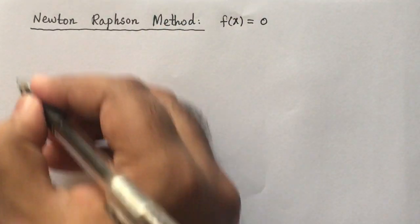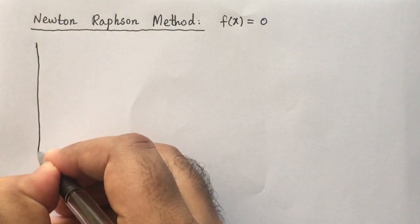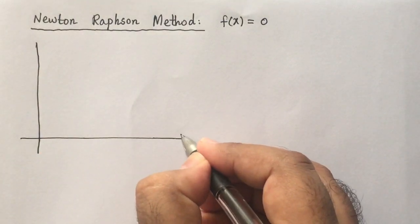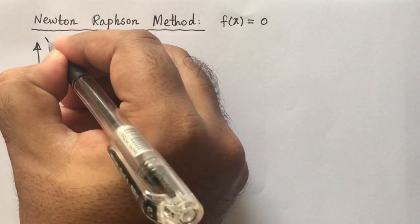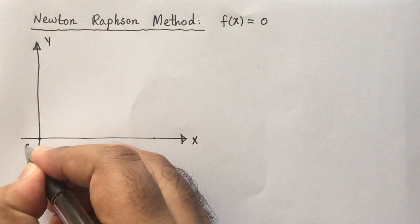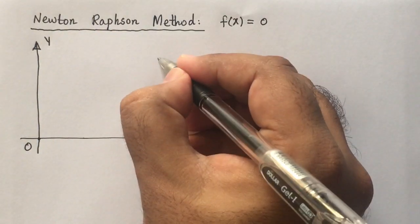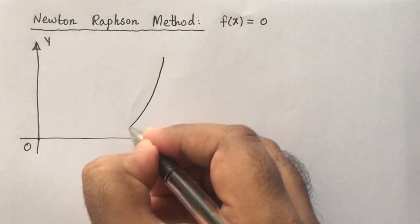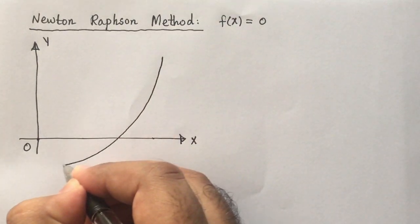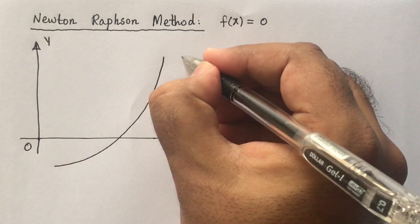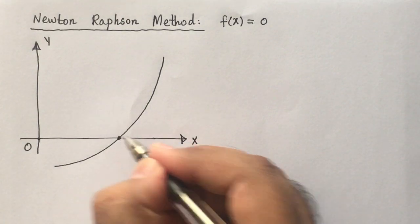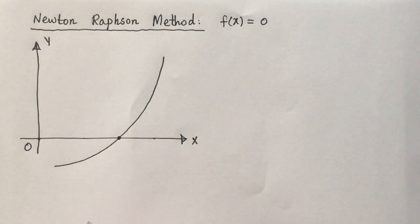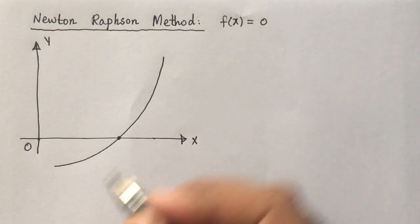Let's consider a two-dimensional Cartesian coordinate system where the horizontal line is called the x-axis, the vertical line is the y-axis, and their crossing point is the origin. The curve shown here is the graph of the function f(x). The point where this graph crosses the x-axis is the solution of the equation f(x) = 0.